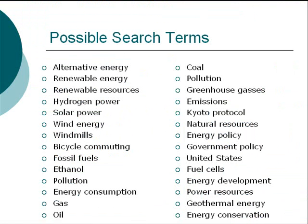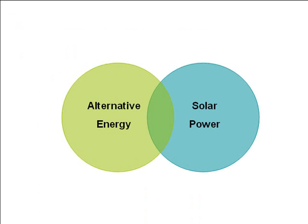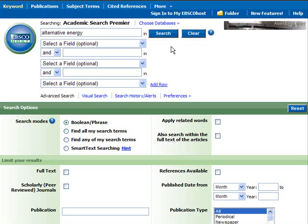Let's look at the list of search terms I brainstormed and pretend that I'm interested in focusing on a more specific source of alternative energy, like solar power. Now when I search, rather than bringing back all results about alternative energy or solar power separately, this database will bring back results that have to do with both. So I'll type "solar power" in here and click search.